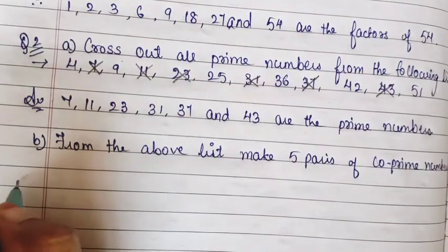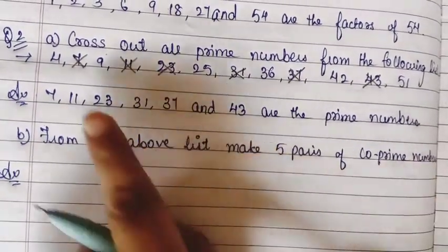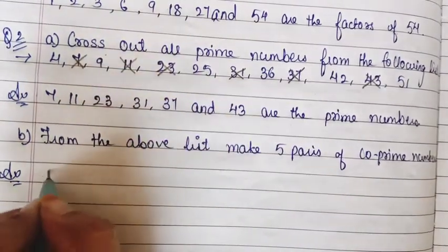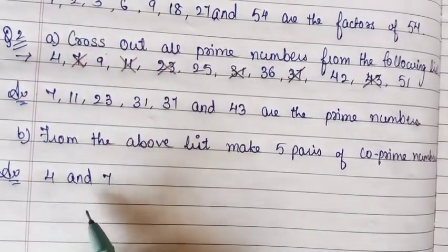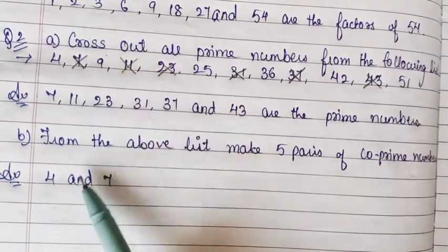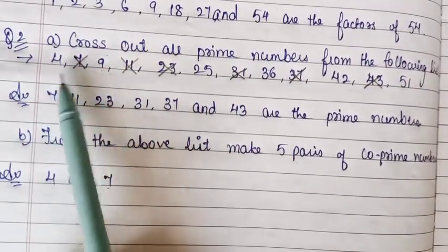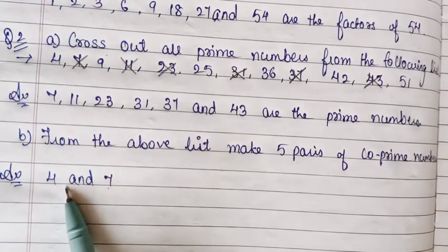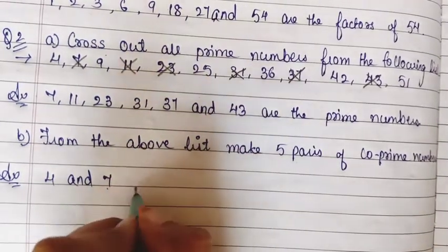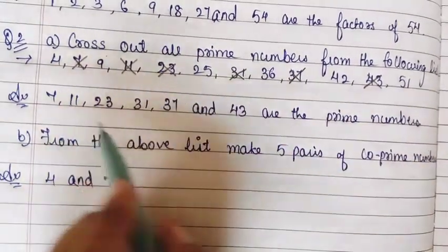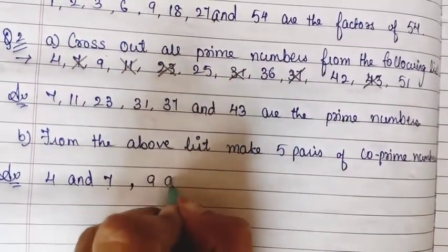So here we will write down our answer. We can take 4 and 7 as the first pair. Why 4 and 7? Because when we see the factors of 4 and 7, only 1 is a common factor — no other common factor. That is why it is called a co-prime pair. The second pair is 9 and 11.